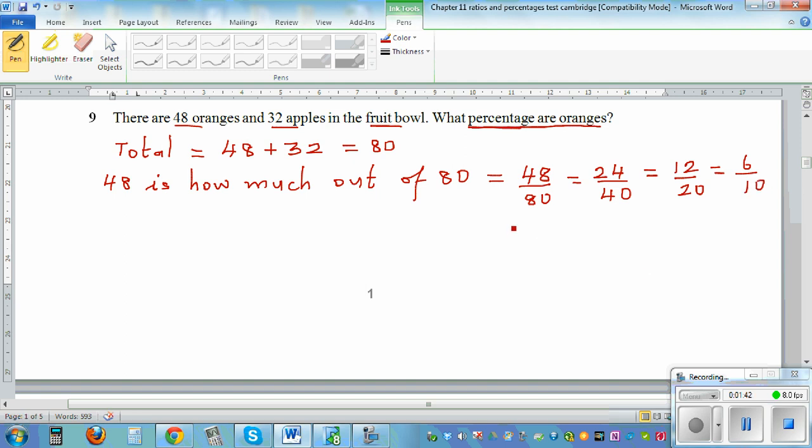Now 6 out of 10, I can write out of 100. You could also have written from 12 out of 20. So how much is this out of 100? I know 10 times 10 is 100, so you do the same thing to the top number. 6 times 10 is 60. So 6 out of 10 as a fraction is 60 out of 100, which is 60%.